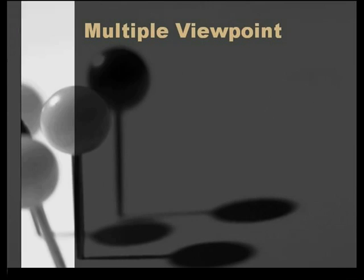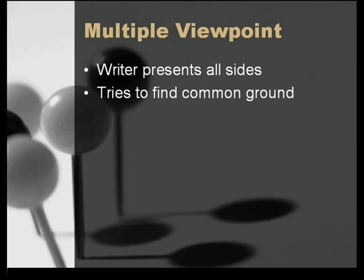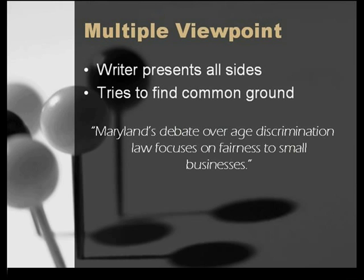Now, contrast the single viewpoint paper with the multiple viewpoint paper. Here, the writer's purpose is to present all sides of the issue, not just one, in an even-handed, objective way. Then, at the end, the writer will try to reconcile the different points of view or find common ground among them. So, our example thesis would change to something like: Maryland's debate over age discrimination law focuses on fairness to small businesses. You see, no side is taken in the multiple viewpoint paper.